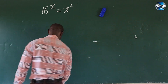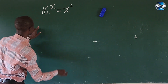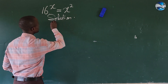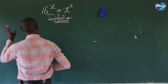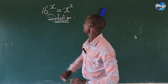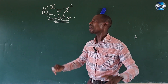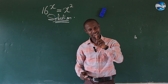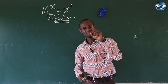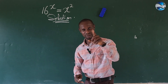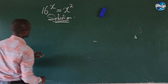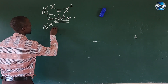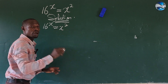So let's go into today's challenge without much waste of time. We take our solution here. The question reads: 16 to the power of x equals x to the power of 2. Let's take down the question: 16 to the power of x equal to x to the power of 2.